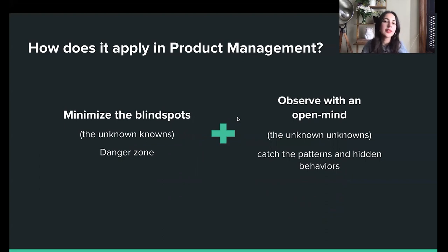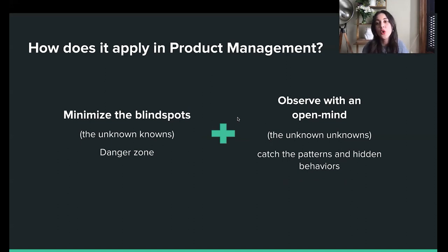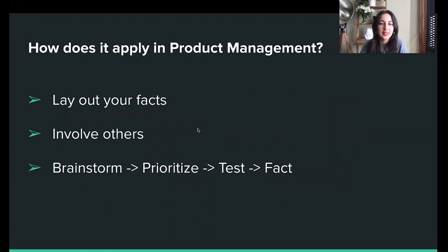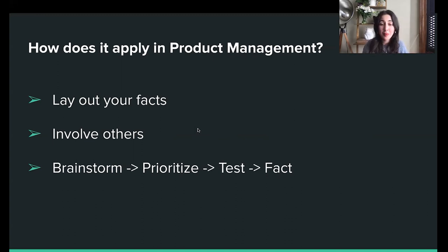So let's talk about how this applies to product management. The goal is to minimize the blind spots — the unknown knowns — which is the danger zone, and which necessitates an open mind. And to dig down and observe to catch patterns and hidden behaviors for new discoveries that give us that big leap. Grow your knowns and prioritize removing some of those uncertainties. Lay out your facts — try to answer questions like: what is your product, what does it do, what value does it bring, who are your users, what do they need, what do they like, what is your company vision, what is your product North Star? The answers will give you your facts.